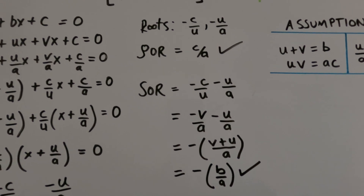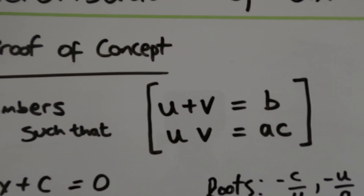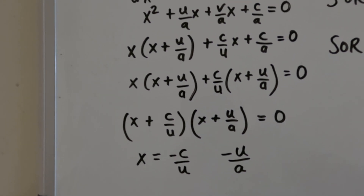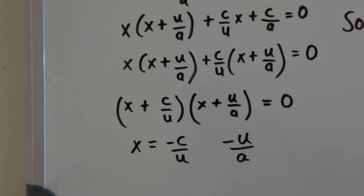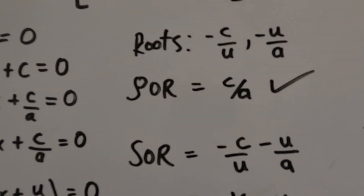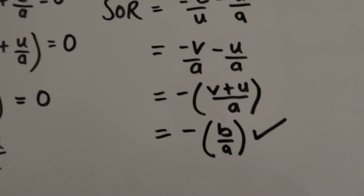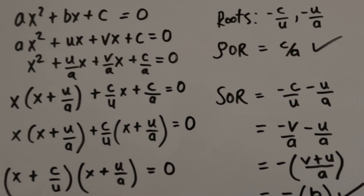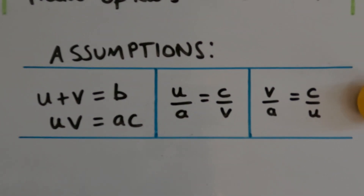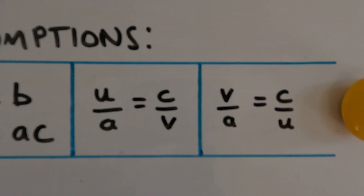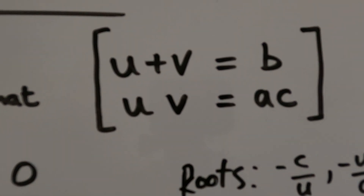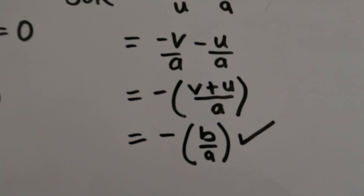So that's it — we've proved that this method of factorization, where you take two numbers u and v whose sum is b and whose product is ac, will always find the roots of any quadratic equation. The product of the roots always comes out to c over a, and the sum of the roots always comes out to minus b over a. The key heavy assumption was that uv equals ac, which we used to change the equation to help with the algebra. And we used the fact that u plus v equals b to finish the last step for the sum of the roots.